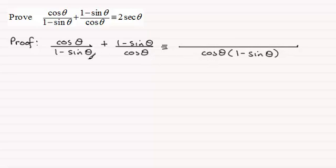So what do we multiply 1 minus sine theta with to give this fraction? So it's going to be cosine theta here. So we multiply the top by cosine theta. And that's going to give us cos squared theta.